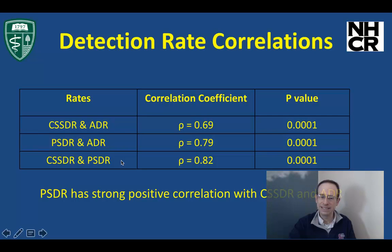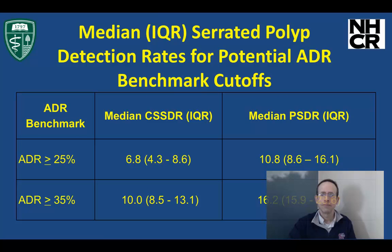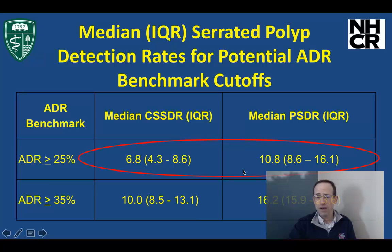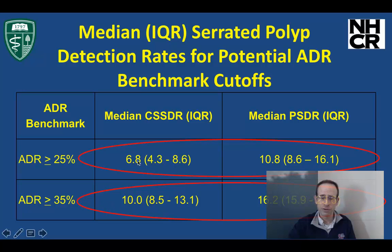If we want an ADR of 25%, the rates for CSDR as well as PSDR are the following. And if we want a higher ADR, these would be the rates of the endoscopists that achieved a higher ADR — in other words, these are the rates for CSDR and PSDR for individuals that had 35% or more, and you can see that they're higher.